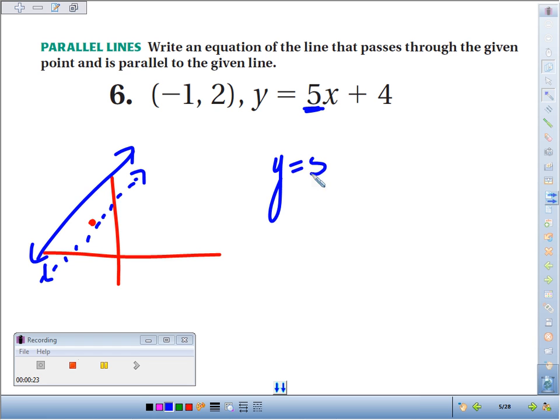The slope has to be 5. y equals 5x plus what? The key is finding the new y-intercept. And we do that by plugging in a point that we know is on the line. It has to make the equation true.